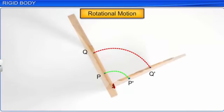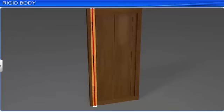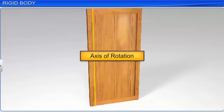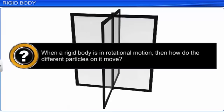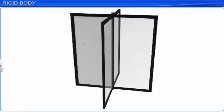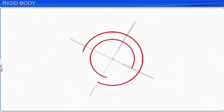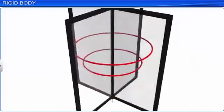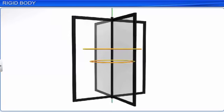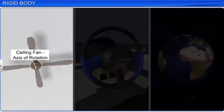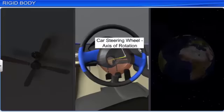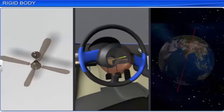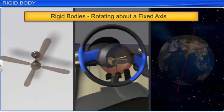The door is fixed to a line passing through the hinges. This fixed line about which a rigid body rotates is called the axis of rotation. When a rigid body is in rotational motion, every point on it moves along a circular path with the center on the axis of rotation, and the plane of this circle is perpendicular to the axis of rotation. The rotating blades of a fan, the steering wheel of a car, and the earth's rotation are some examples of rigid bodies in pure rotational motion, where the axis of rotation is fixed.